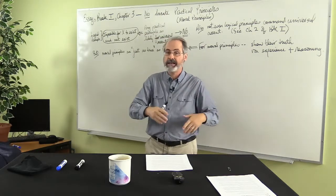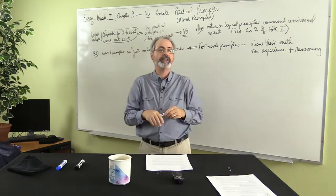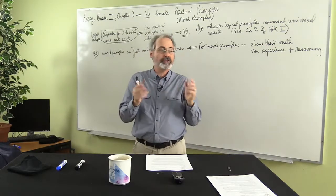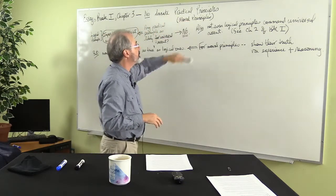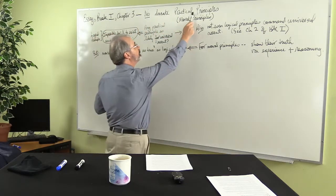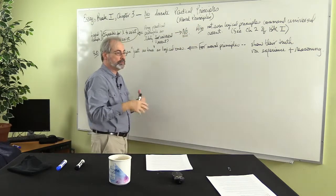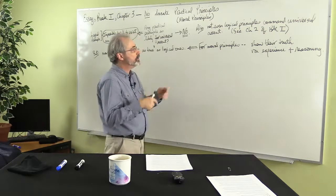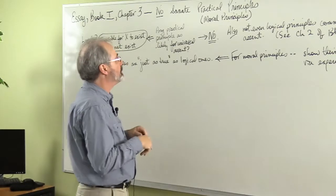But as he did the innate speculative, the logical, he went against those in the previous chapter. In this chapter, he wants to say there are no innate practical principles. For practical principles, think moral principles, like moral rules, moral laws, like don't kill, don't do bad things, or whatever. So that's what he's talking about when he talks about practical principles.